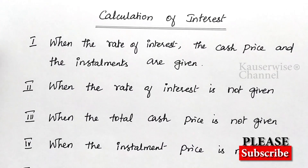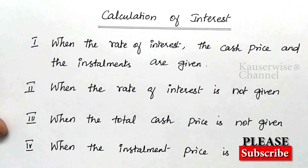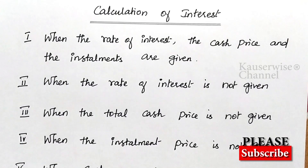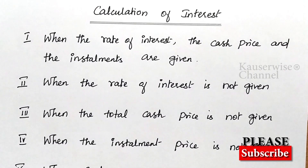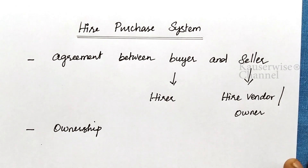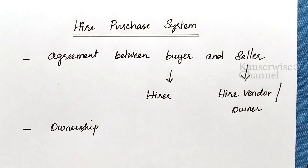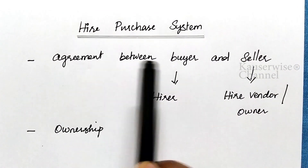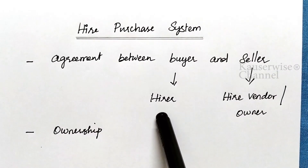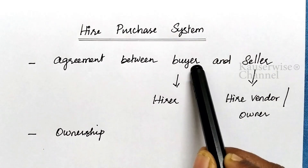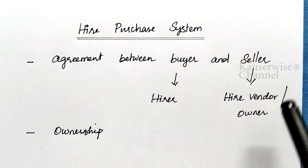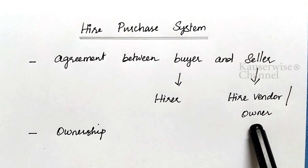Now let us see what is Hire Purchase System briefly, along with some necessary information, and then we will see the problem. Hire Purchase System is an agreement between buyer and seller — here buyer refers to the hirer and seller refers to the hire vendor, that is the owner.